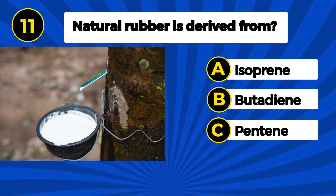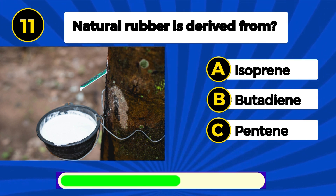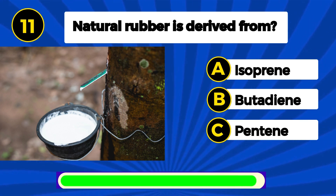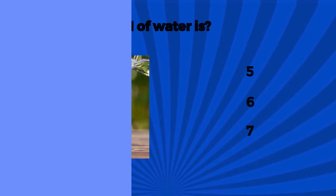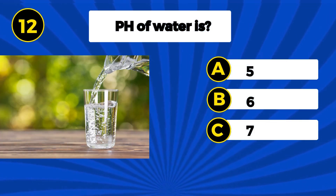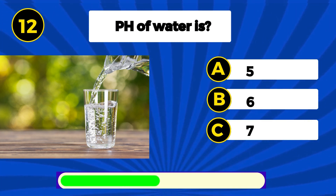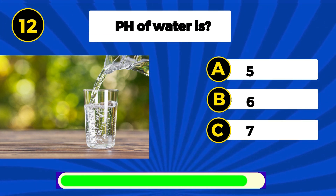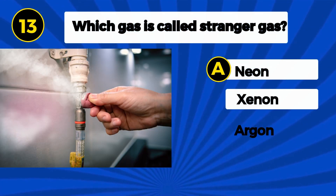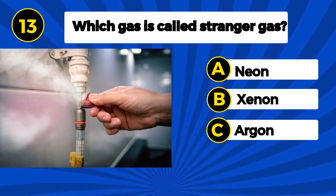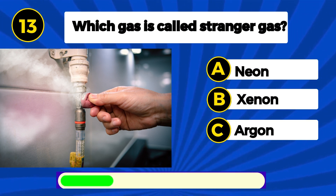Natural rubber is derived from? Isoprene.